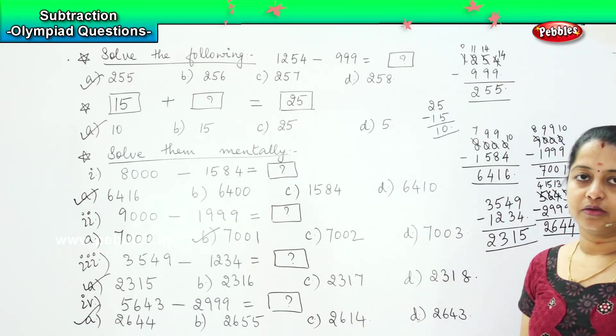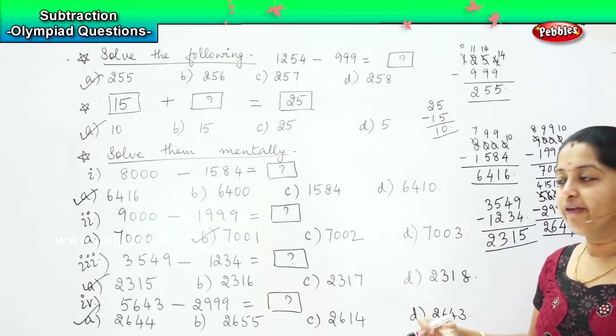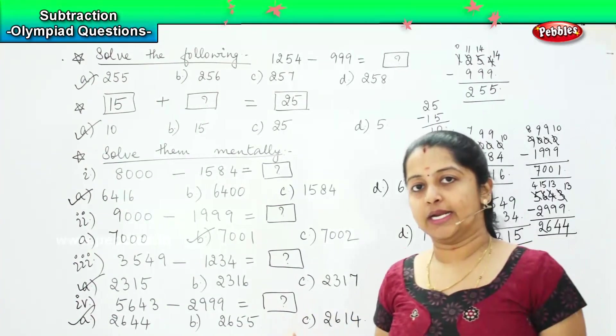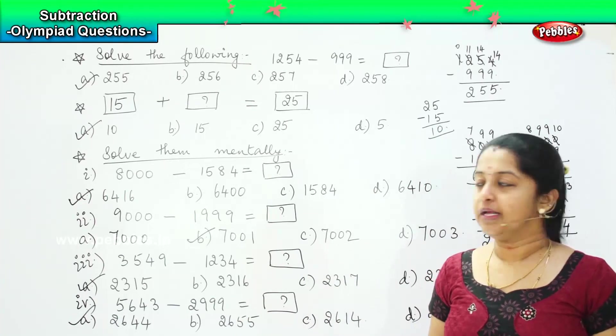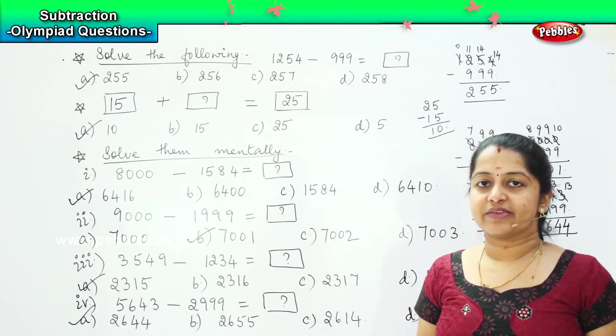So was it easy to solve these sums? You need to calculate them mentally, which means that you have to see the sum and understand whether it is regrouping or without regrouping method and then solve accordingly. Clear? Shall we go to the next level of questions?